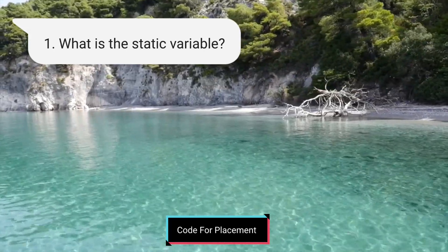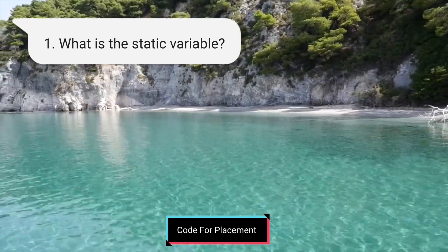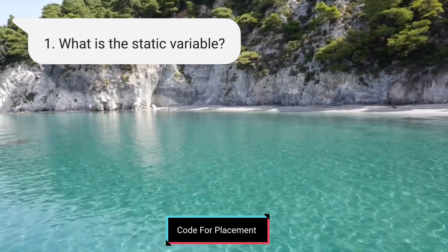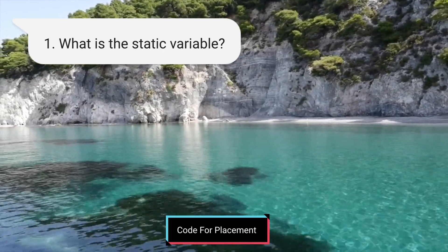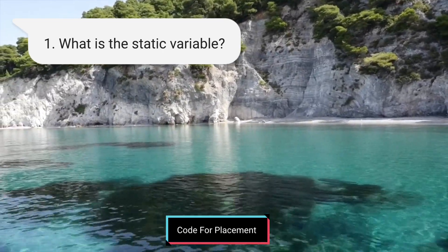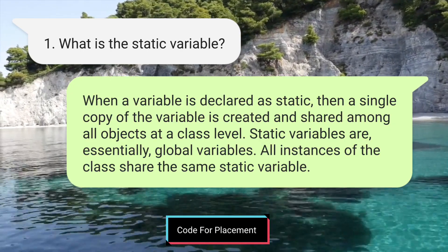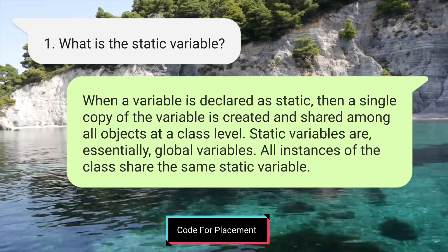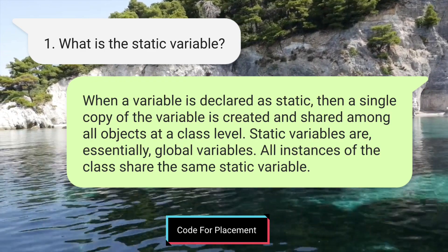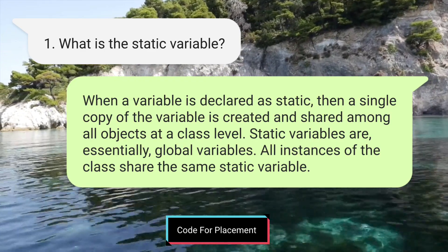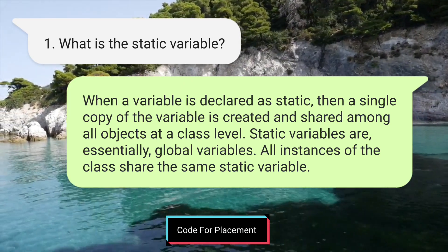Hello everyone, welcome to Code for Placement. In today's video we will see another set of questions which are frequently asked in Java interviews. For the first question: what is a static variable? When a variable is declared with the keyword static, a single copy of the variable is created and shared among all objects in the class. Static variables are essentially global variables — all instances can access them.